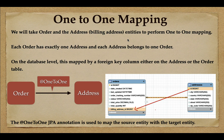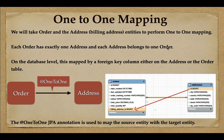Welcome back. In this lecture we'll take a look into one-to-one mapping overview. We'll use order and address entities to demonstrate this. In an e-commerce shopping website, whenever you place an order you also fill in the billing address for that order. Each order has exactly one billing address and each billing address belongs to one order.